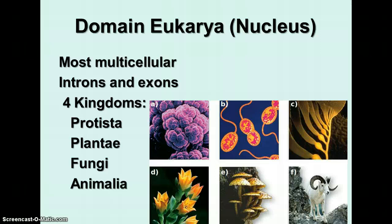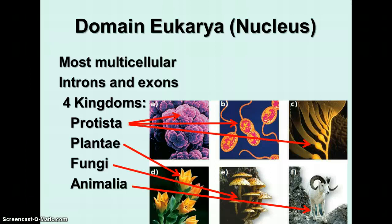Domain Eukarya, the third domain — all members of this domain have a nucleus. Most of the members are multicellular. Their DNA has both introns and exons, which means we're probably more closely related to the Archaebacteria. There are four kingdoms in this domain: kingdom Protista, which is mostly single-celled organisms; kingdom Plantae, which is the plants; kingdom Fungi, which is the fungi; and kingdom Animalia, which is the animals. We're going to talk about each one of these kingdoms in turn.